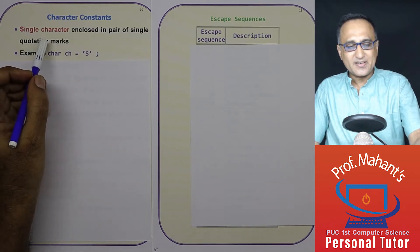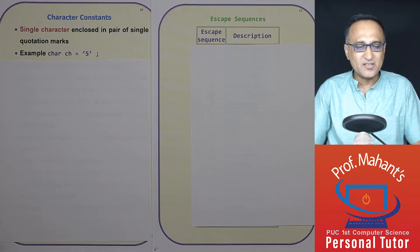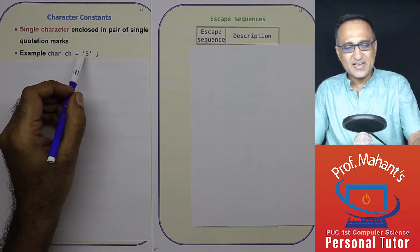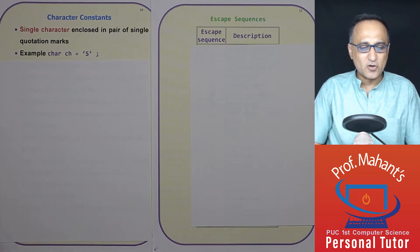A single character when it is enclosed in a pair of single quotation marks is referred to as a character constant. So 's' is enclosed in a pair of single quotes. So 's' is an example of a character constant.